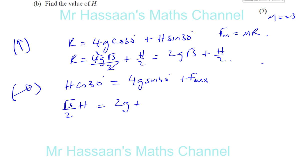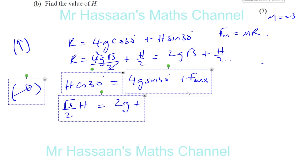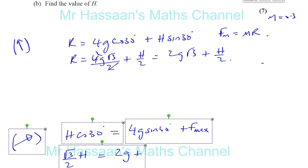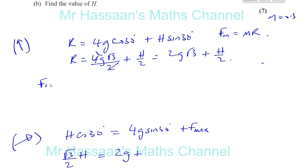So F max. Let's move all this stuff down a bit. So we're going to say that F max is equal to mu R, which is 3 tenths, 0.3, multiplied by 2G root 3 plus H over 2. So you're going to have that will be 3 over 5 root 3, so 3 over 5G times root 3, plus that will be 3 over 20H.